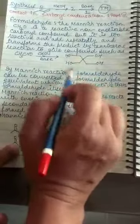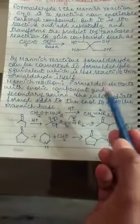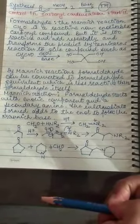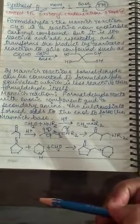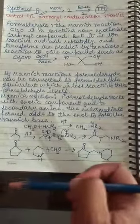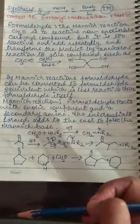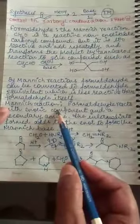So to overcome this problem is the Mannich reaction. By Mannich reaction formaldehyde can be converted to the formaldehyde equivalent which is less reactive than formaldehyde itself. So the self-condensation and other undesired reactions in which we are not interested will not take place.